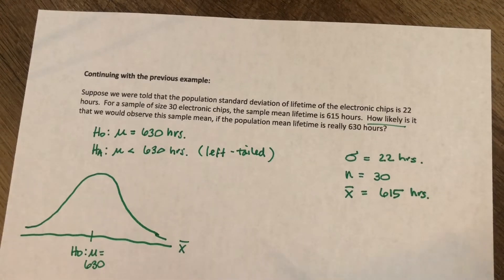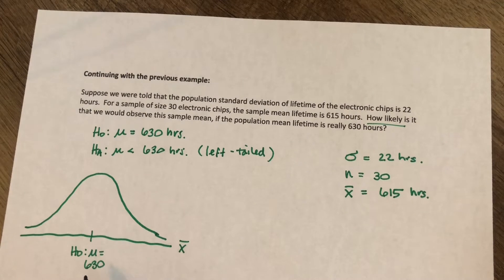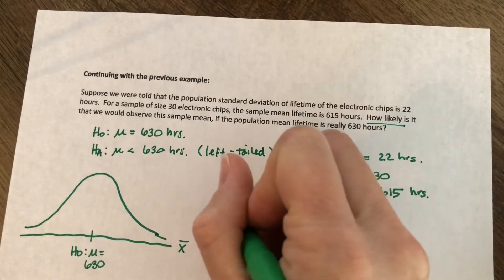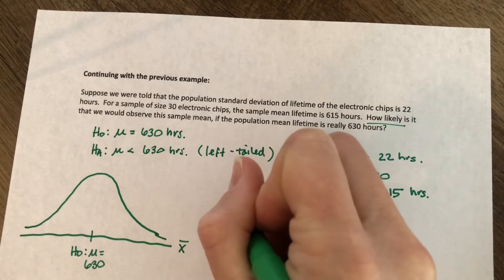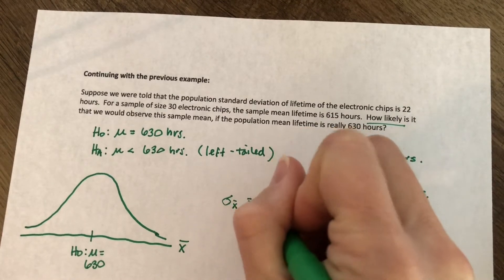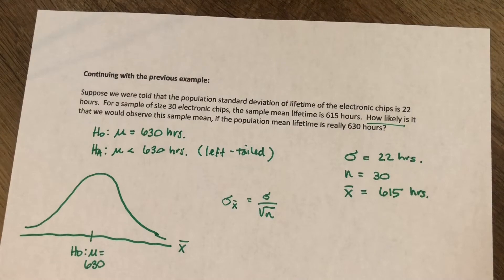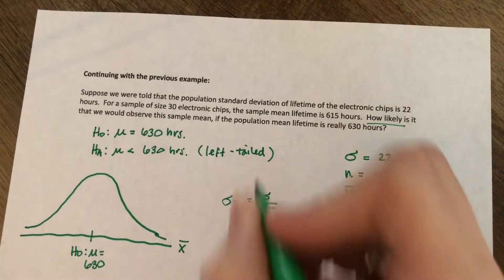And what we want to know is, how likely is it that I would observe an x bar of only 615, which would be down here somewhere? Well, in order to answer that question, we need to know the spread. The spread of all possible sample means, and that's sigma sub x bar. And we learned back in chapter 6 that sigma sub x bar is equal to sigma over the square root of n.